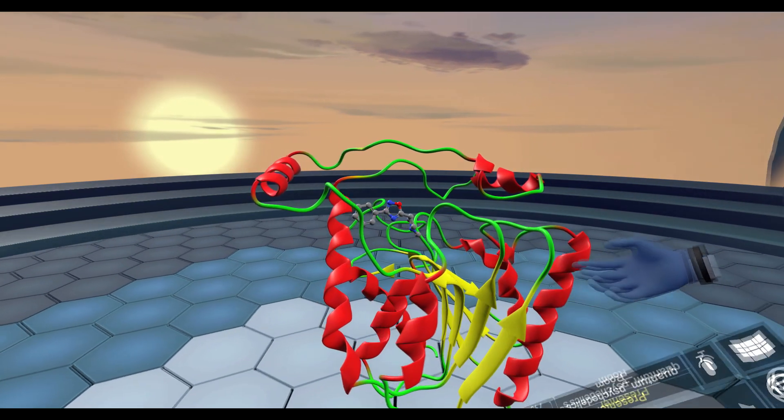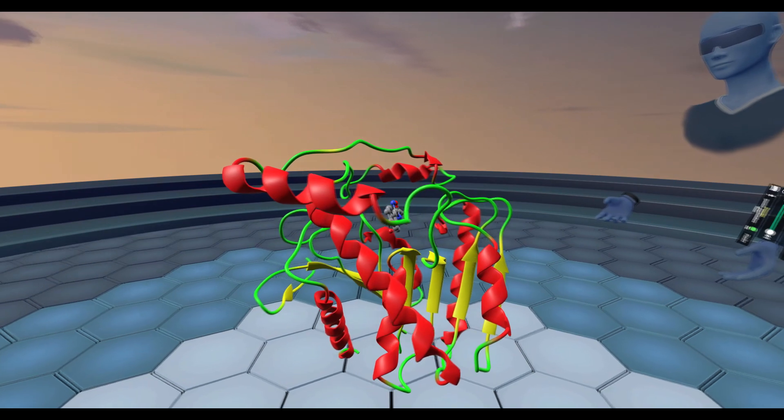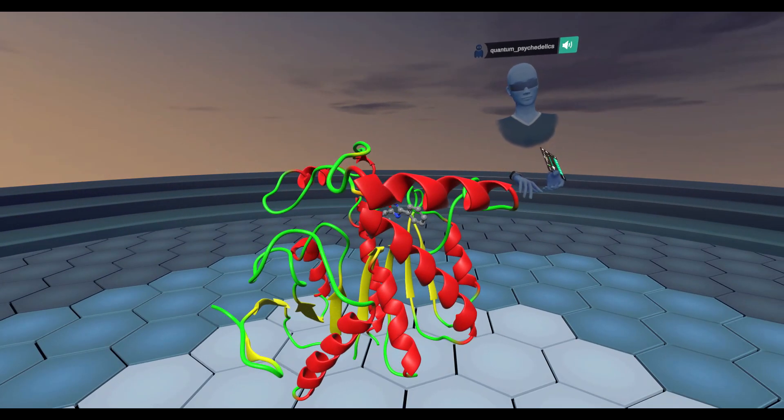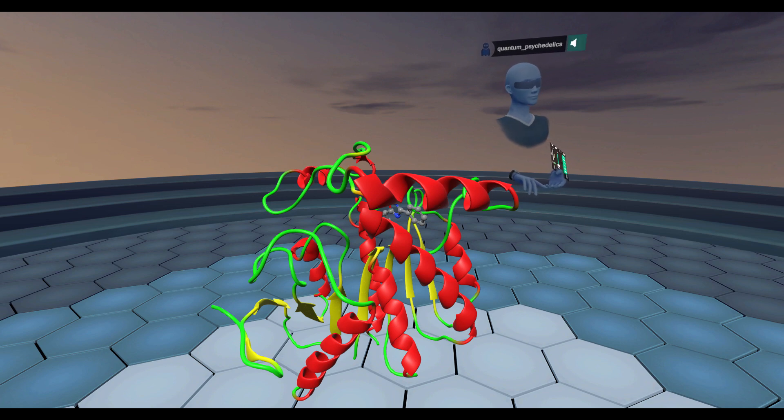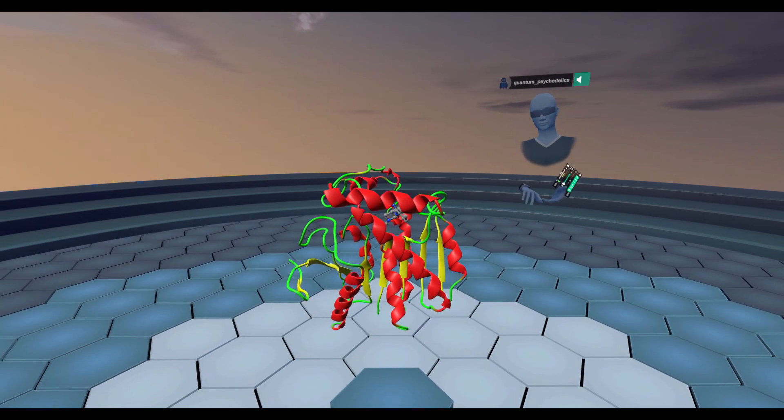What we've gone over in this video is the endocannabinoid system. In summary, it's comprised of three parts: two receptors, CB1 and CB2, two endogenous ligands that your body synthesizes to bind to those receptors, which were anandamide and 2-arachidonylglycerol.